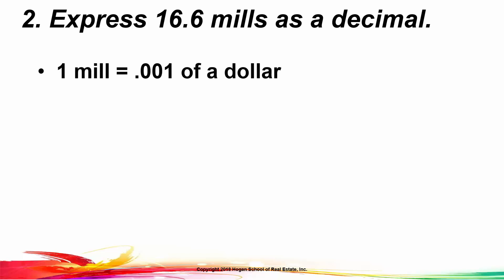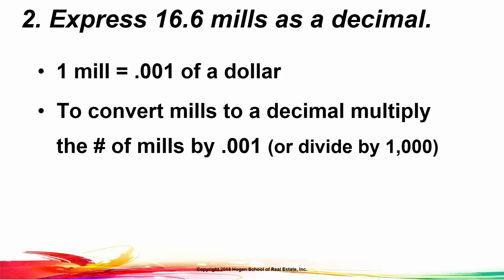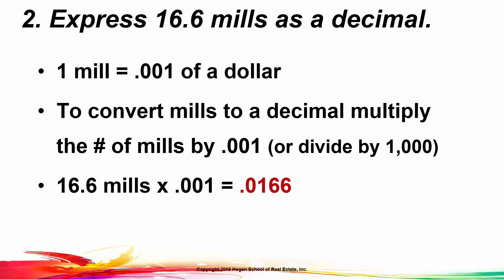By definition, one mil is one one-thousandth of a dollar. So to convert mils to a decimal, you multiply the number of mils by .001 (one one-thousandth), or you divide the number of mils by 1,000. So 16.6 mils multiplied by .001 equals .0166 as a pure decimal.